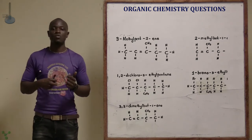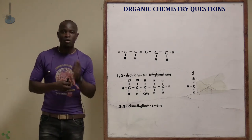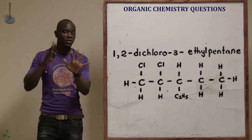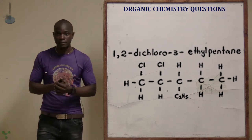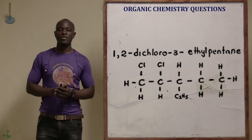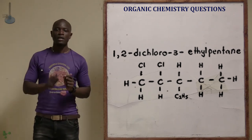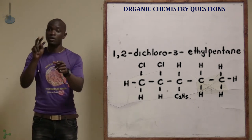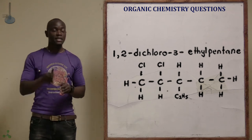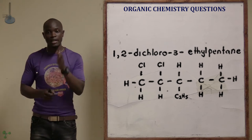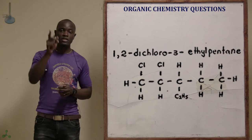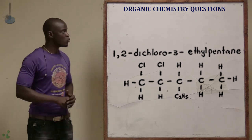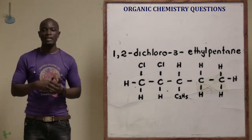Next is 1,2-dichloro-3-ethylpentane. The longest chain is pentane — pent means 5 carbons with no double or triple bond (alkane). Draw 5 carbon atoms. At carbon 1 and carbon 2, draw chlorine (halogen) to make the dichloro. At carbon 3, draw an ethyl group (C2H5). That is the structure of 1,2-dichloro-3-ethylpentane.